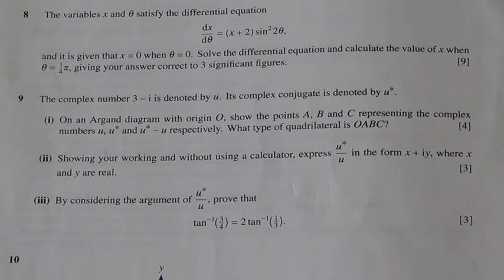For the first part, on an Argand diagram with origin O, show the points A, B and C representing the complex numbers u, u star and u star minus u, respectively. Also state what type of quadrilateral is OABC. Four marks.